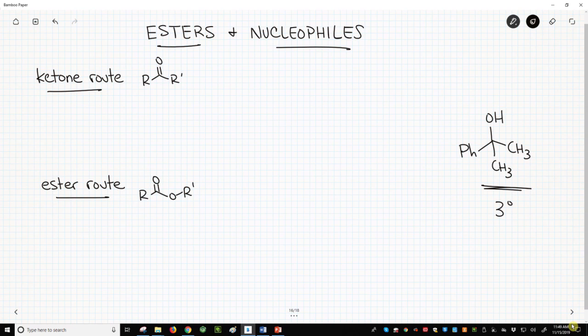All right, let's work out the ketone route. Ketones have two groups on the carbonyl carbon, an R and R prime group shown in this picture. Let's say that our ketone starter material already has one of the methyls and the phenyl. That means we just need to add the second methyl to get to our product. We'll add it as a nucleophile, methyl lithium.